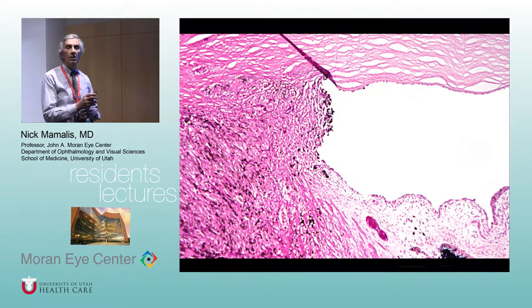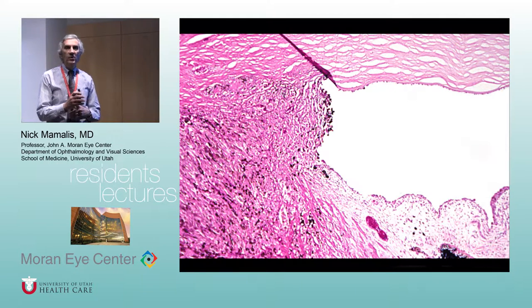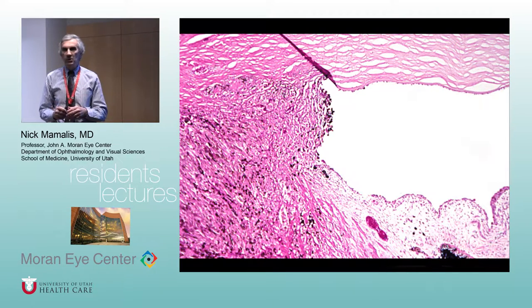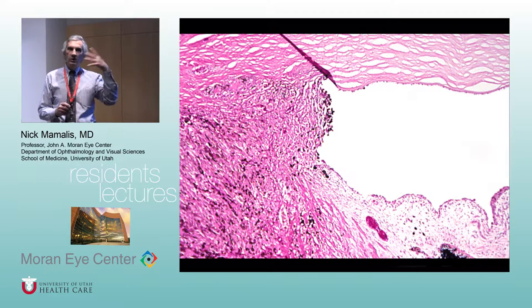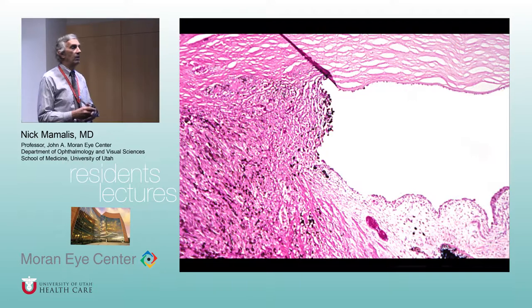The classic setting is someone who just exercised — especially jogging — and gets blurring of vision for about 20 minutes, due to a stream of pigment being loosened by the bouncing movement.